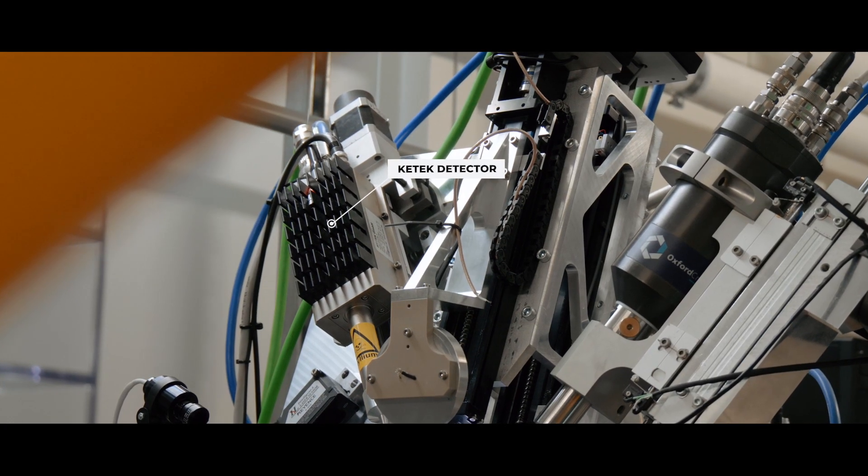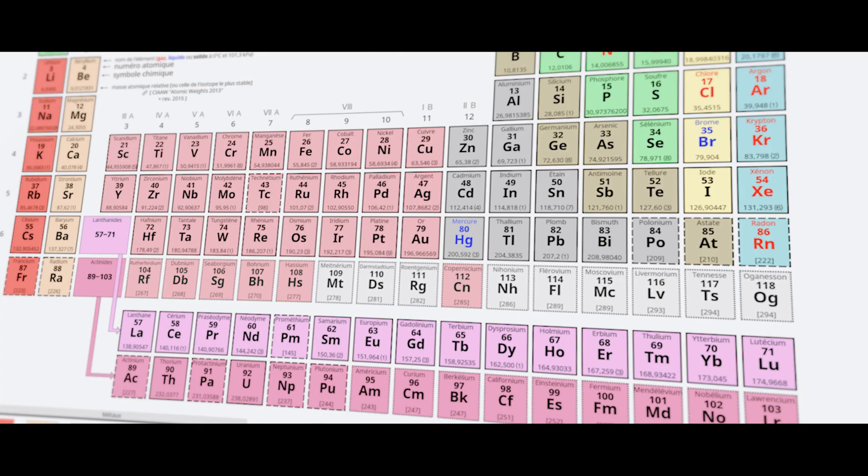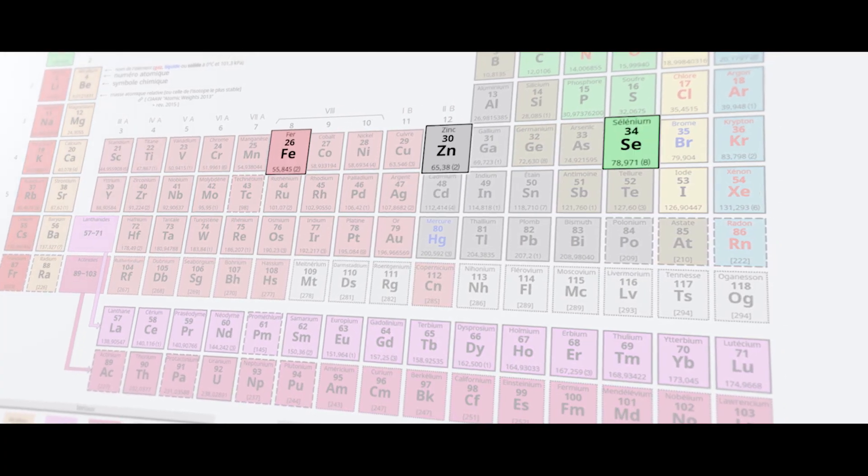In addition, a Ketek detector allows us to do fluorescence spectroscopy on heavy elements such as iron, zinc, selenium or lanthanides.